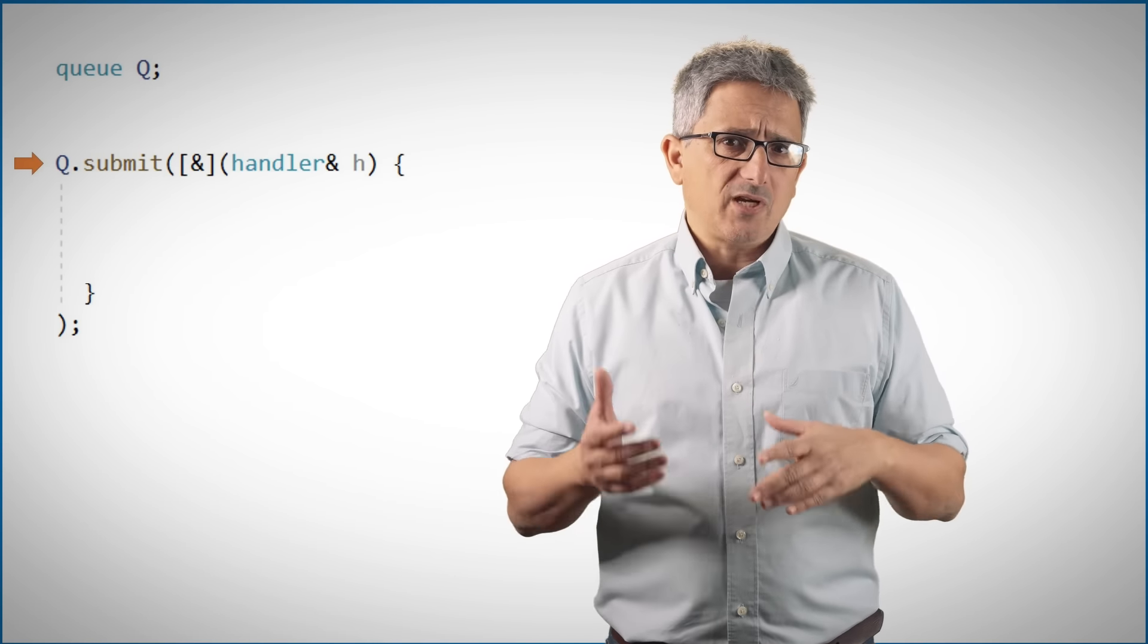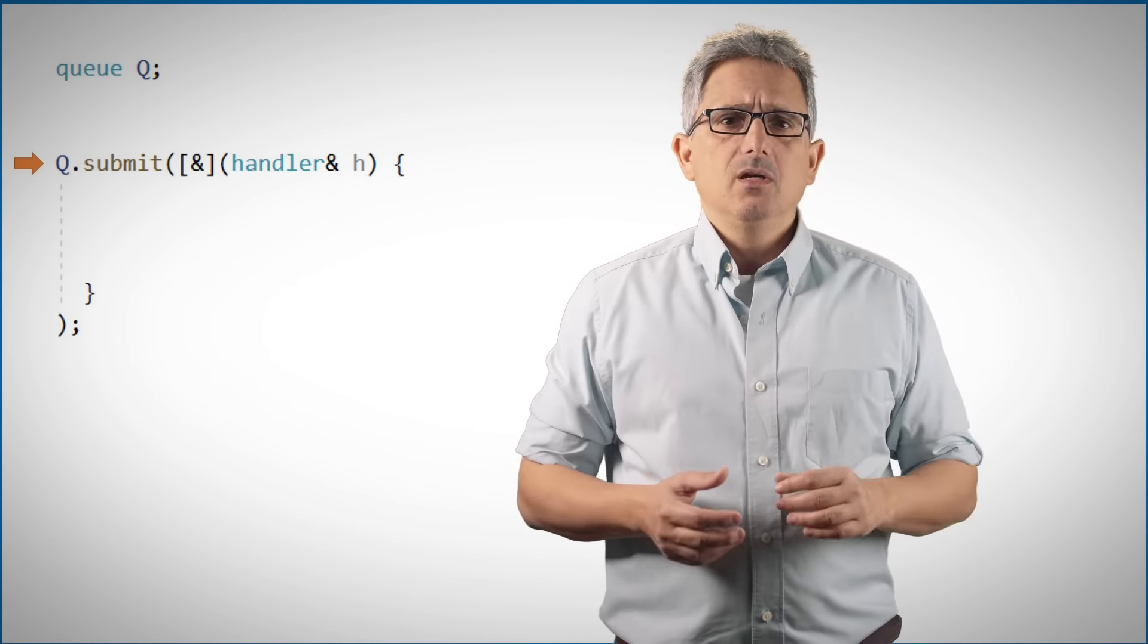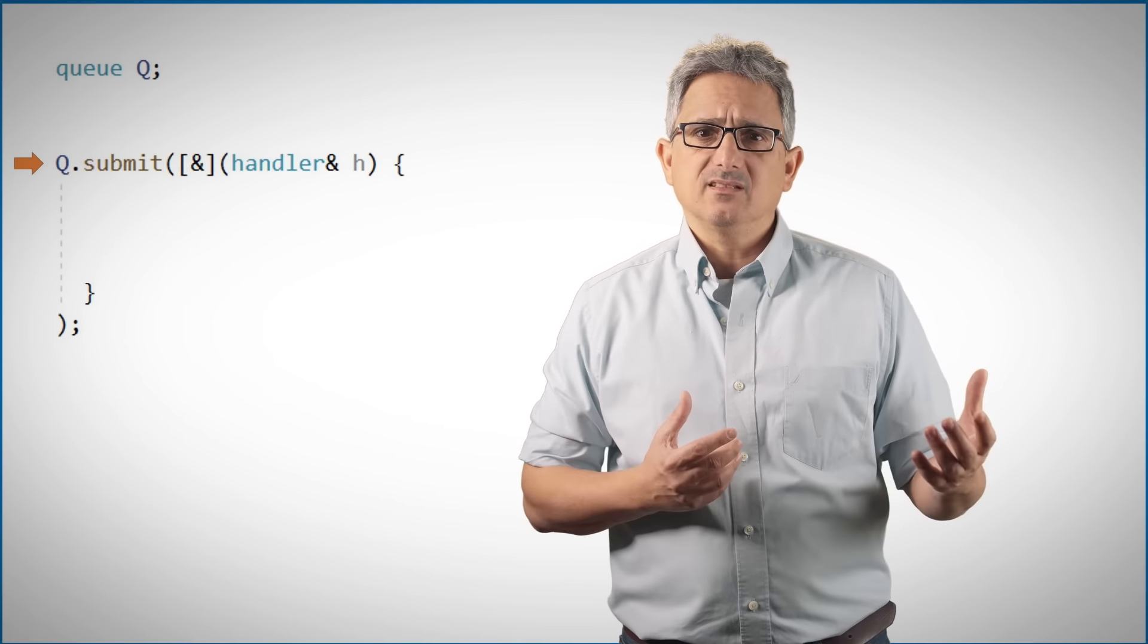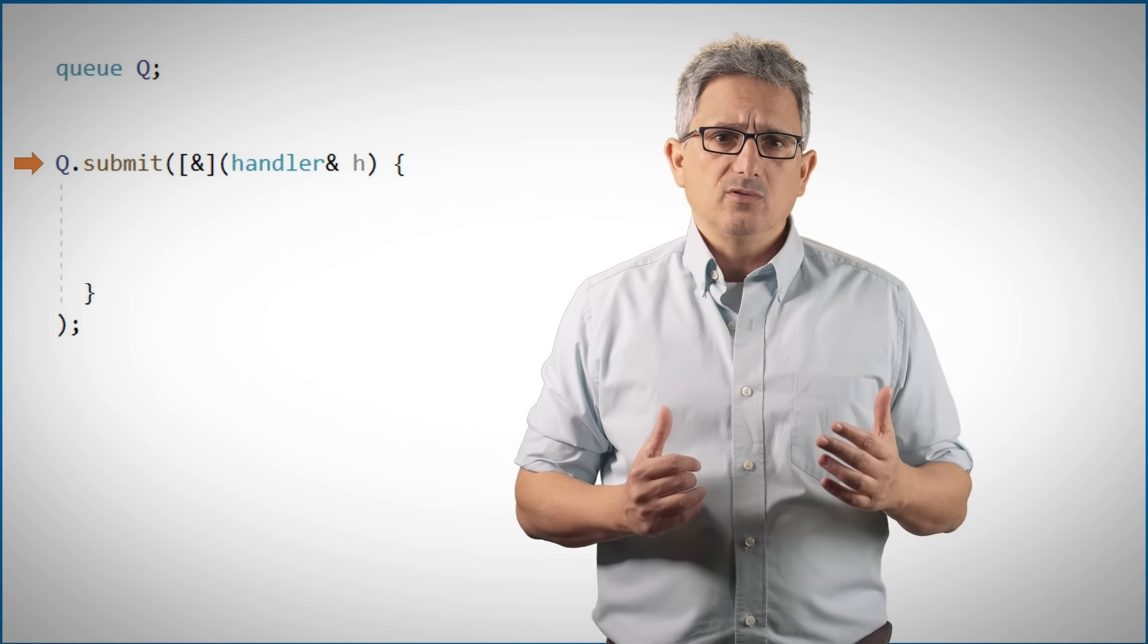So let's just take a queue, just give me the default device, and now I can submit work to this queue. I'm getting a handler which I call it here H, but what I want to do is to manipulate data. I need data structures or memory accesses that are coherent to the device and the host.